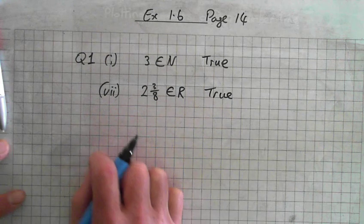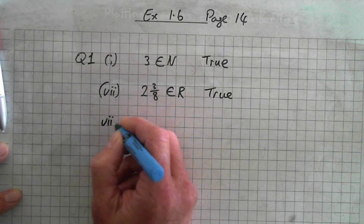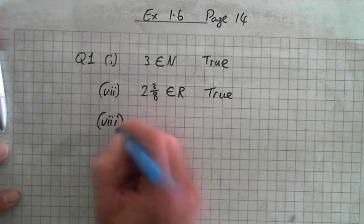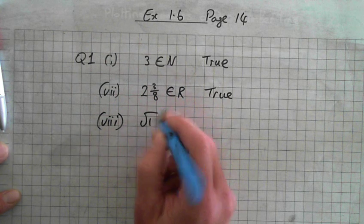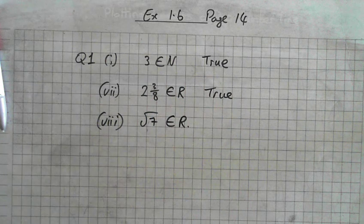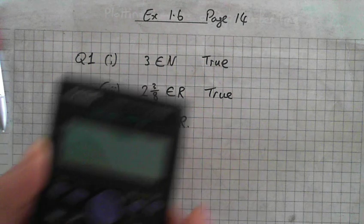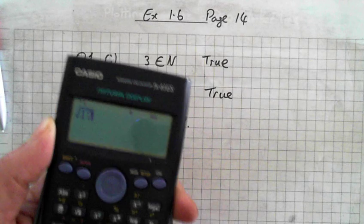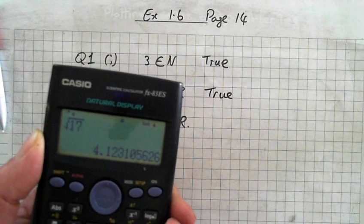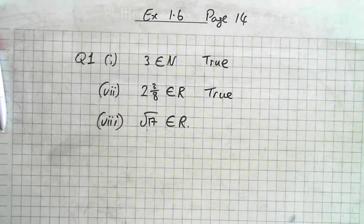Here's another example. It's a square root of 17. Is that a real number? Yes, because everything is included in the real numbers. If you get the square root of 17, it's 4.123. Decimals are included in real numbers, so true.